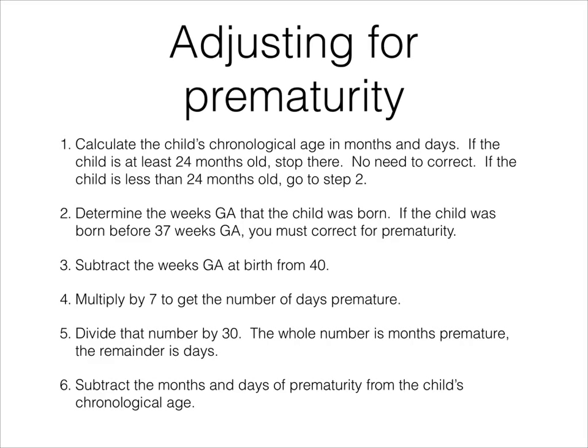You subtract the weeks of gestational age at birth from 40. 40 is a term pregnancy. For example, if the baby was born at 32 weeks gestational age, you take 40 minus 32, and that tells you that the baby was born eight weeks early.